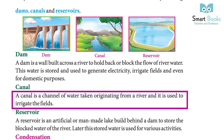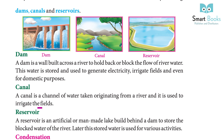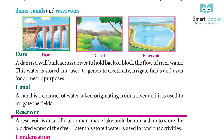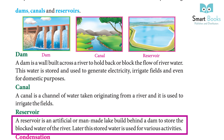A canal is a channel of water originating from a river, used to irrigate the fields. A reservoir is an artificial or man-made lake built behind a dam to store the blocked water of the river. Later, the stored water is used for various activities.